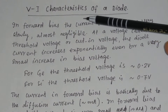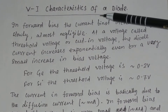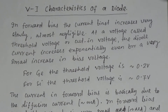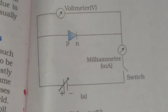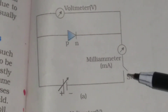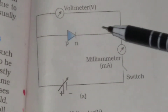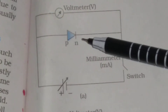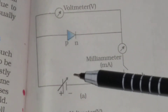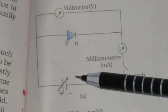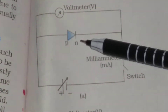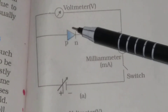We will study the VI characteristics of a diode, or the VI characteristics of a P-N junction. We can find out the VI characteristics of a semiconductor diode when the diode is forward biased and also the VI characteristics when the diode is reverse biased.